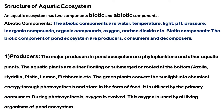Aquatic ecosystem has two components: biotic and abiotic components. Living components are biotic components. Non-living components are abiotic components. Abiotic components include water temperature. Biotic components are producers, consumers, and decomposers. The producers in an aquatic ecosystem are majorly plants — water-based plants.